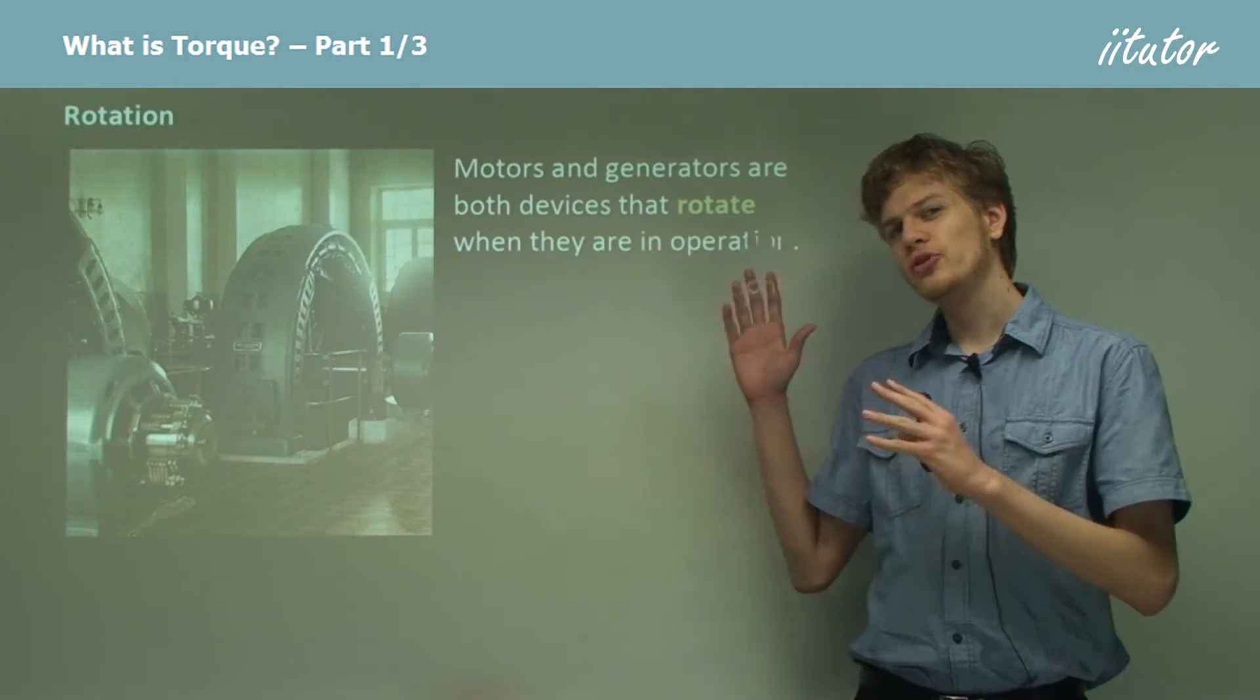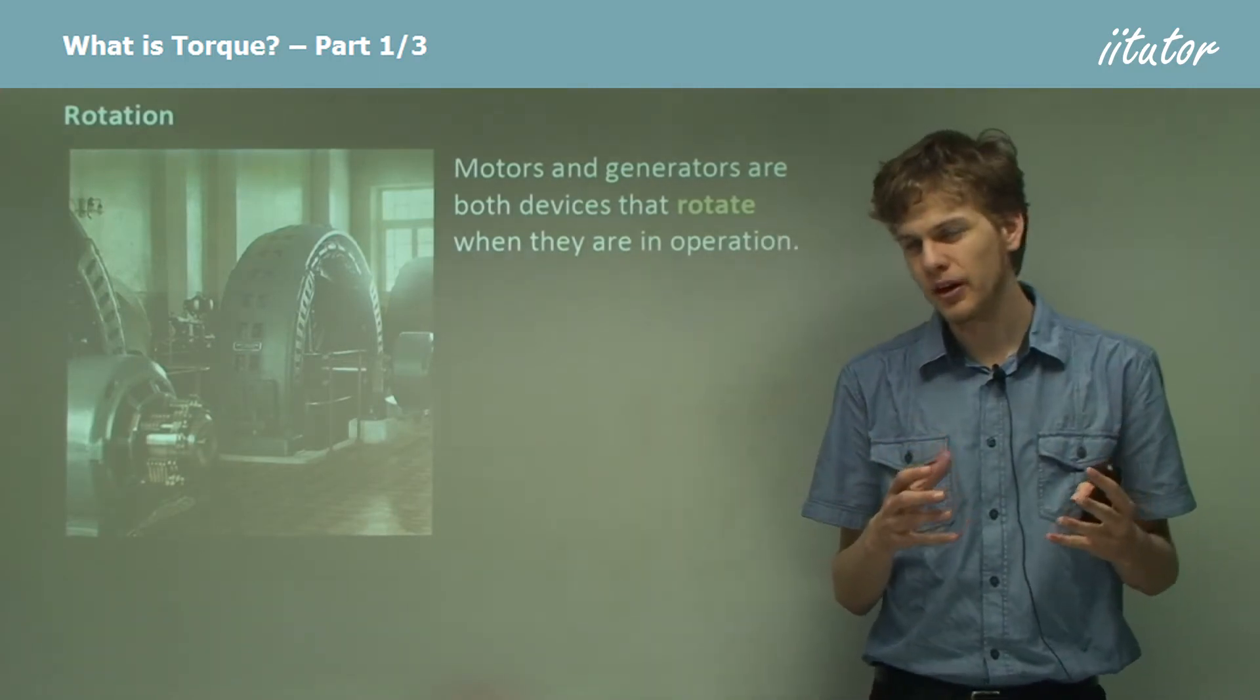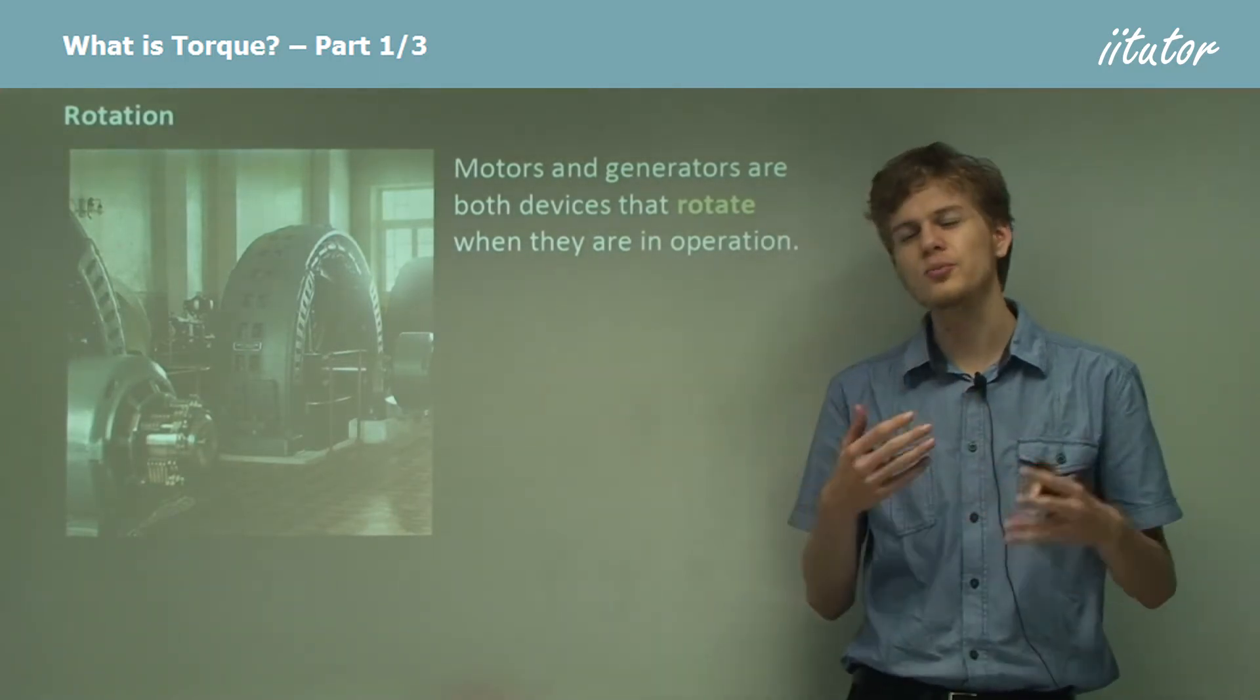So motors and generators are both devices that rotate around some central axis when they're in operation.